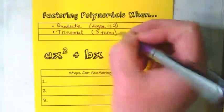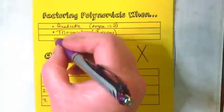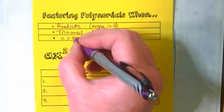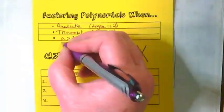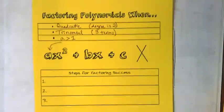But the third criteria is different. This is when our a is greater than 1, meaning there is going to be a coefficient here that is not invisible and is greater than 1.